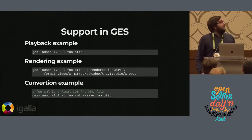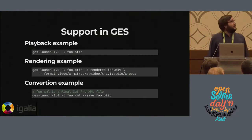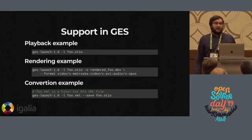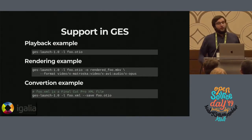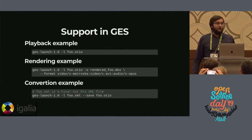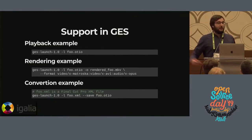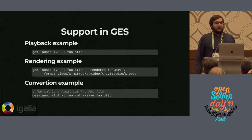We have full support of OpenTimelineIO inside the GStreamer Editing Services, which means you can just play back. gst-launch is a very simple command-line tool that lets you describe a timeline with a specific format or load an external timeline from a file. In the first example, we just play a foo.otio and it plays back, doing everything natively, as if it were a GES file — just a timeline description.